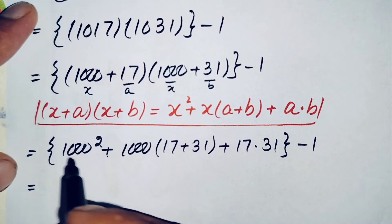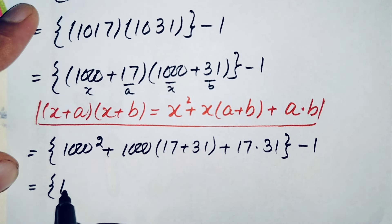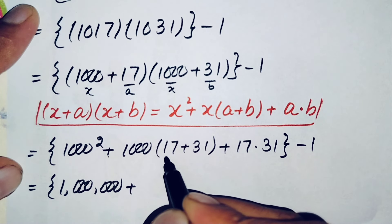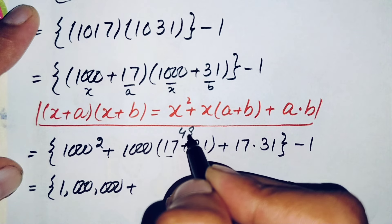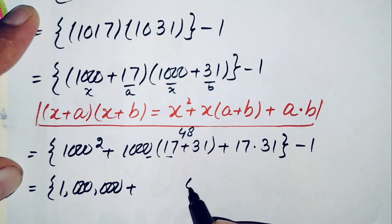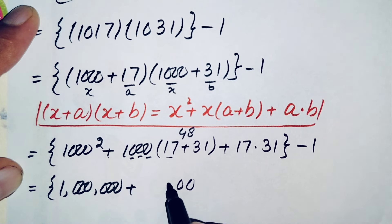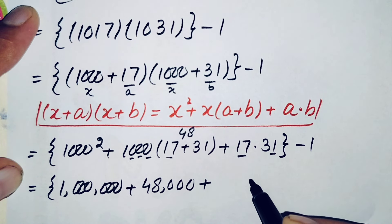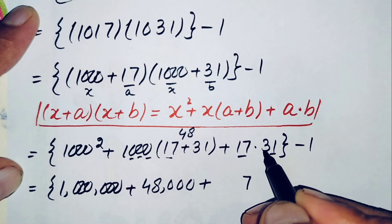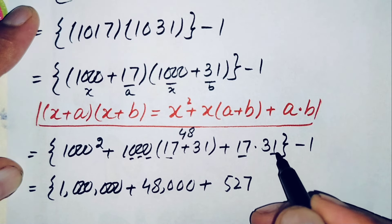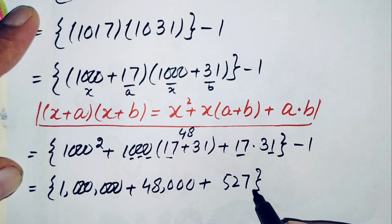The square of 1000 is 1,000,000. The sum of 17 plus 31 is 48, and 48 times 1000 is 48,000. Then 17 times 31: 17 times 1 is 17, 17 times 3 is 51, so 17 times 31 gives 527. We now have 1,000,000 plus 48,000 plus 527, minus 1.